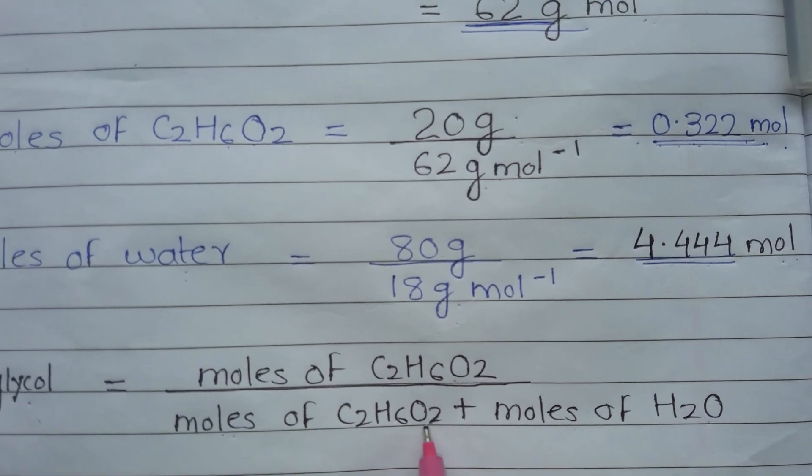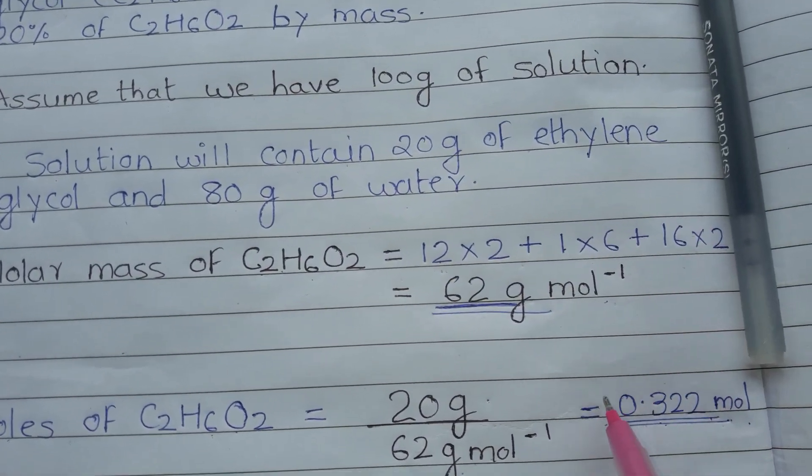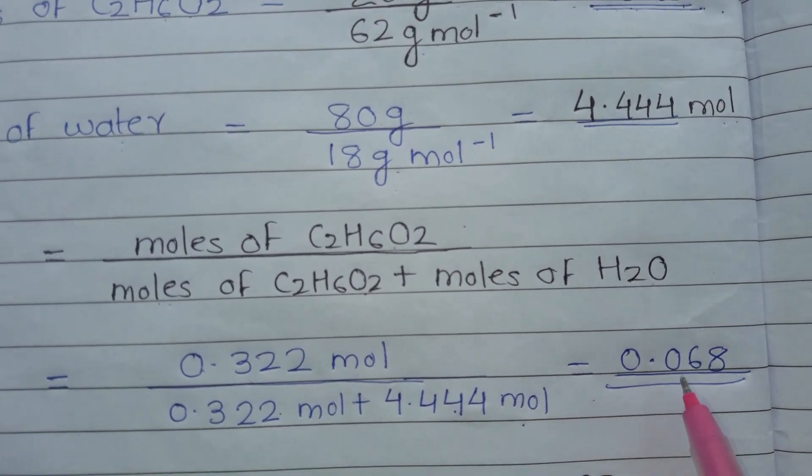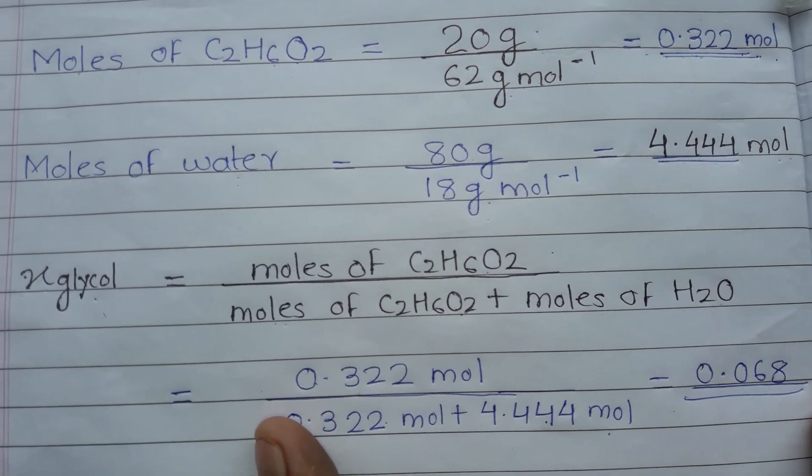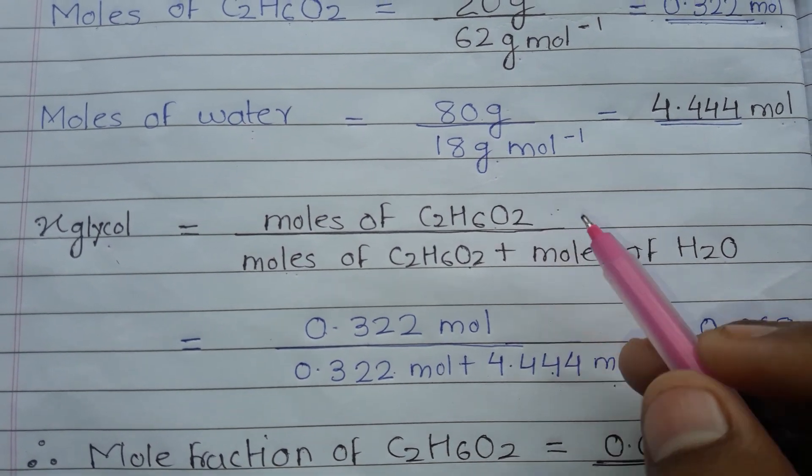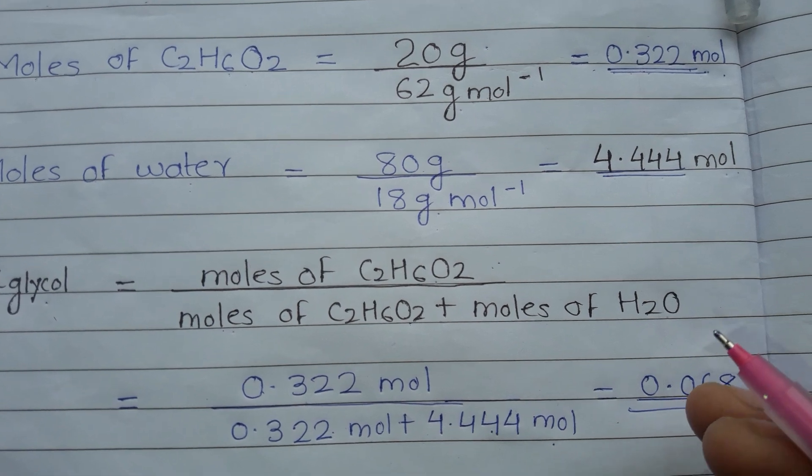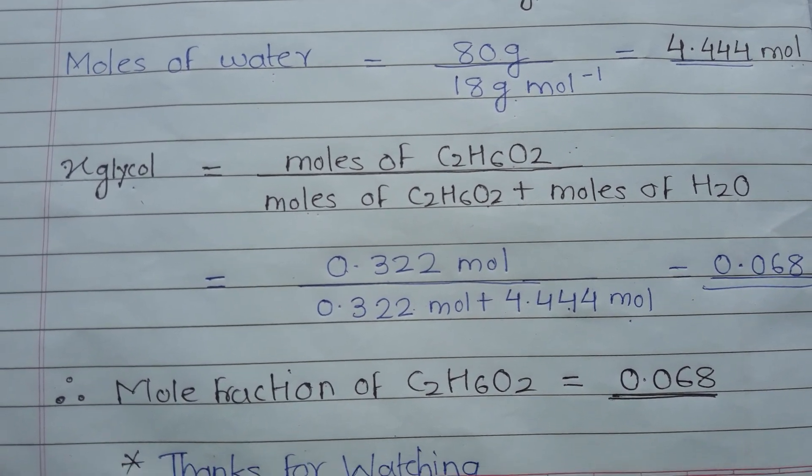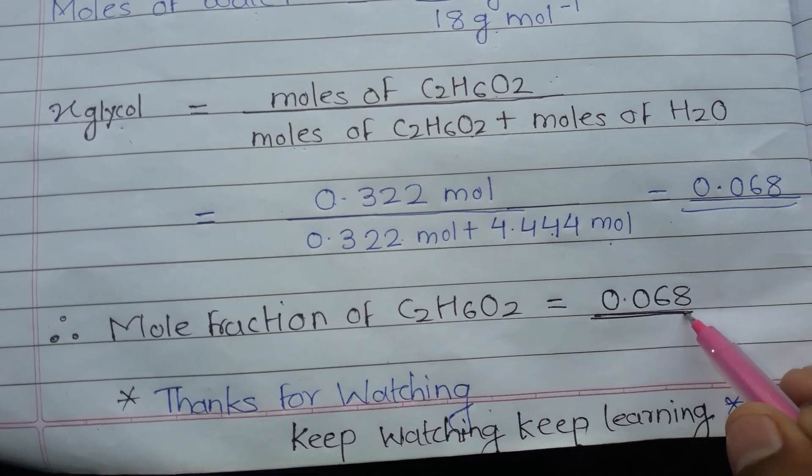Now we know moles of ethylene glycol is 0.322, and moles of water is 4.444. So the mole fraction equals 0.322 divided by (0.322 plus 4.444), which equals 0.068.